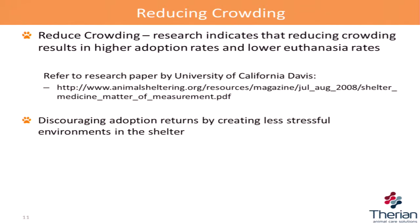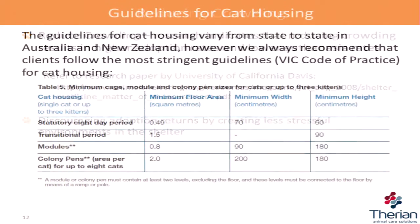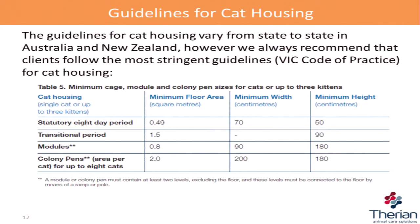Discouraging adoption returns by creating a less stressful environment: if you put out a dog or cat that's already stressed, chances are they probably won't last long with the adoptee — they'll probably come back. Obviously having less stress is good. For cat housing, every state has something different. When designing facilities here in Australia or New Zealand, we try to look at what is the most stringent and say we should be at least that.